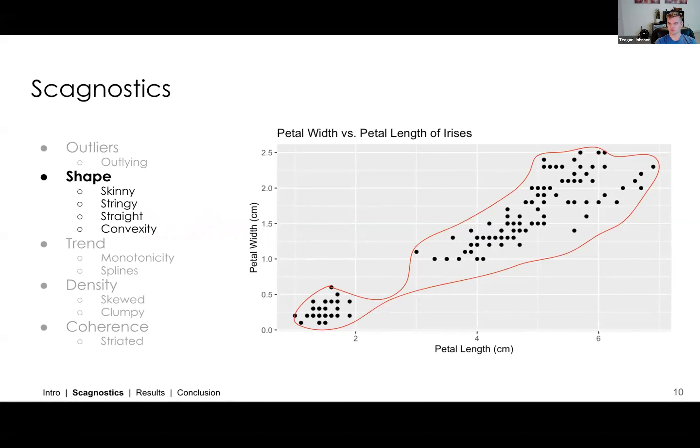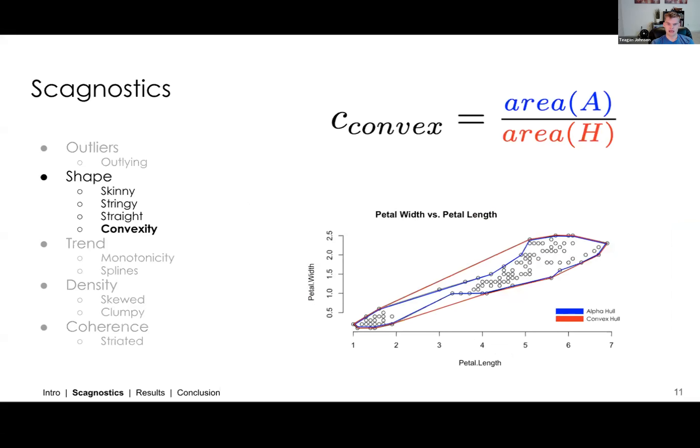We show an example of shape, which is there's four different types of diagnostics that try to describe what the shape of a graph is. And so specifically, we're going to look at convexity. If you go to the next slide, we have an example graph here, which is the iris data set, a very classic graph using statistical analysis.